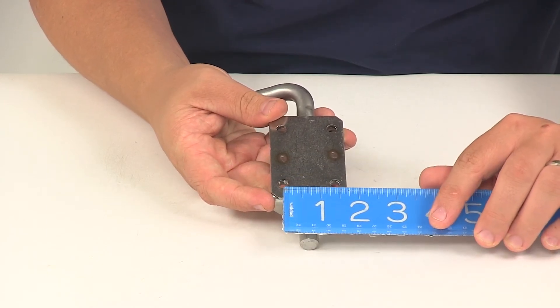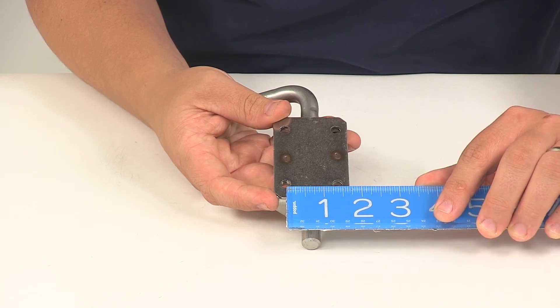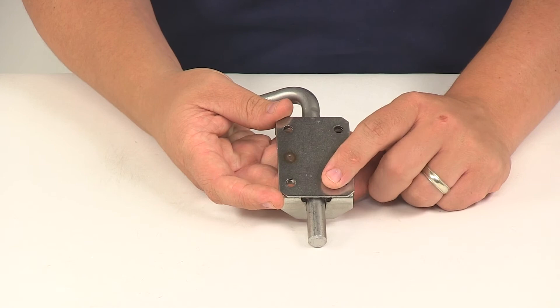Center on center going this direction, we're looking at a measurement of about one and three eighths of an inch. The mount holes have a diameter of a quarter of an inch.